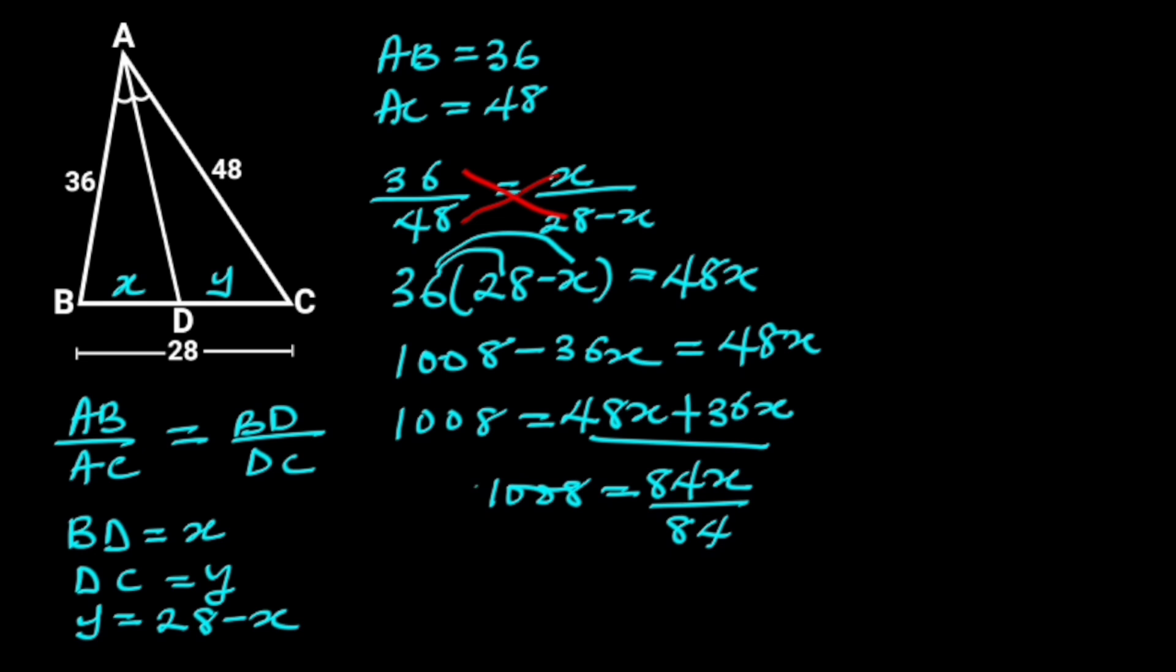To find X, we divide through by 84. 84 will cancel out 84, 1008 divided by 84 is 12. Hence, X is equal to 12.